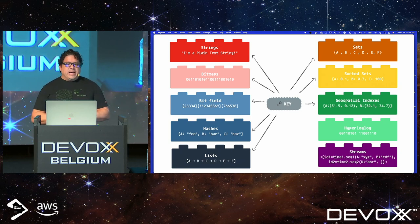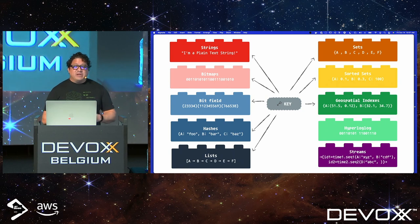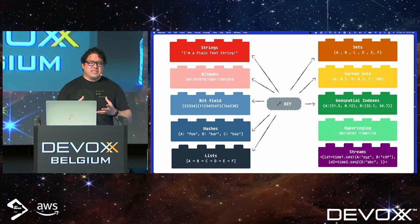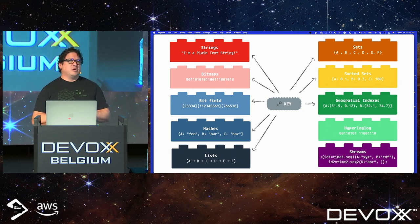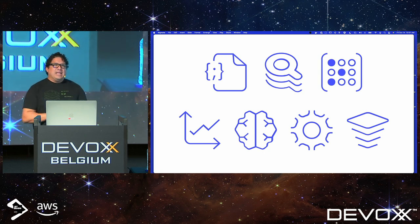We also have bitmaps, bit fields, hashes — hashes are kind of the workhorse for object-oriented languages, you can typically map an object to a hash. We have lists, sets, sorted sets which are pretty interesting for range searches, geospatial indexes, HyperLogLog which is a probabilistic data structure, and streams. If you wanted to do something like Kafka-lite, you can do that in Redis.